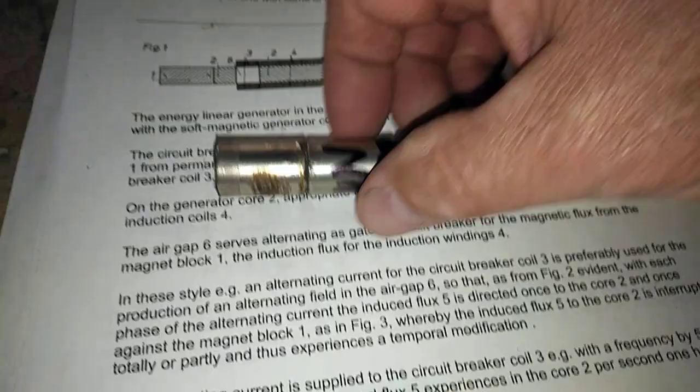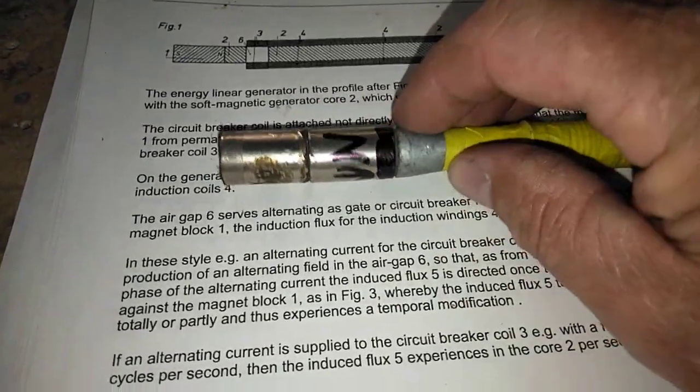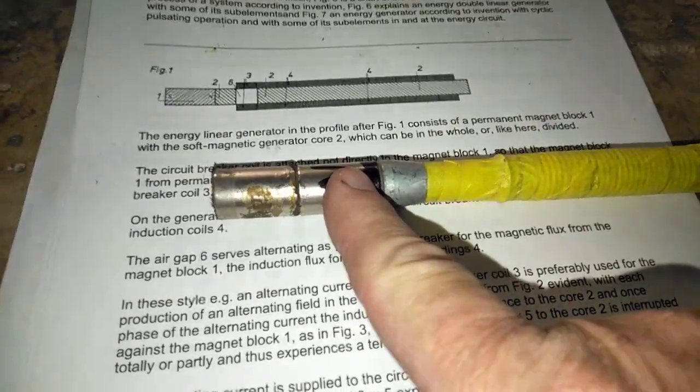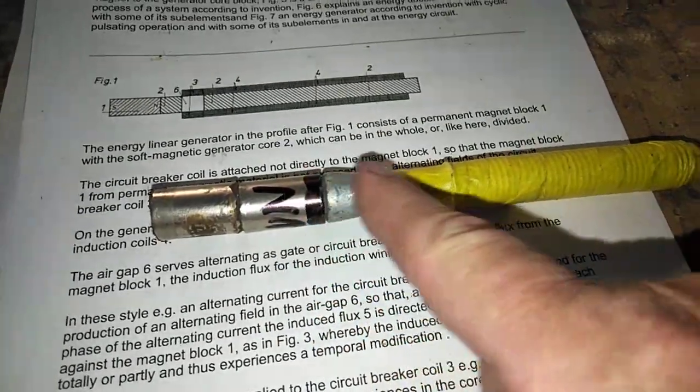And here we are using a rare earth magnet, a neodymium, and we need to have the north pointing this way to conduct or to transfer the north-facing flux.